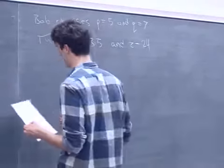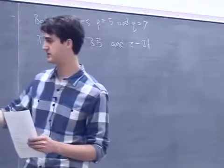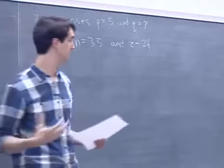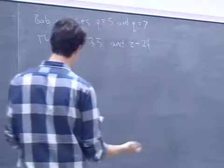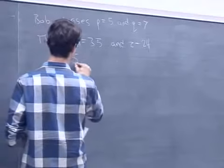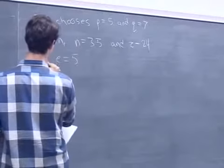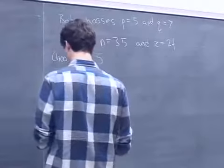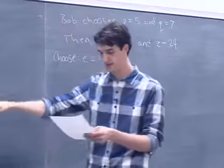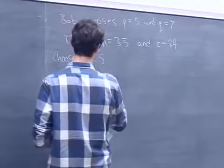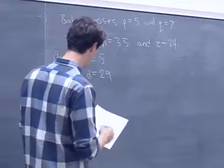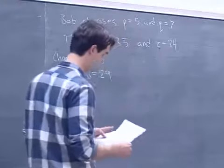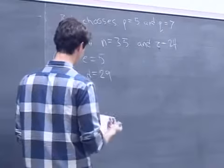We need to choose the encryption key e such that e < n and gcd(e, z) = 1 — so e must be relatively prime with 24. We choose e = 5. Now we need to find d: we choose d = 29, because 5 × 29 − 1 is divisible by 24, which is the condition we need.